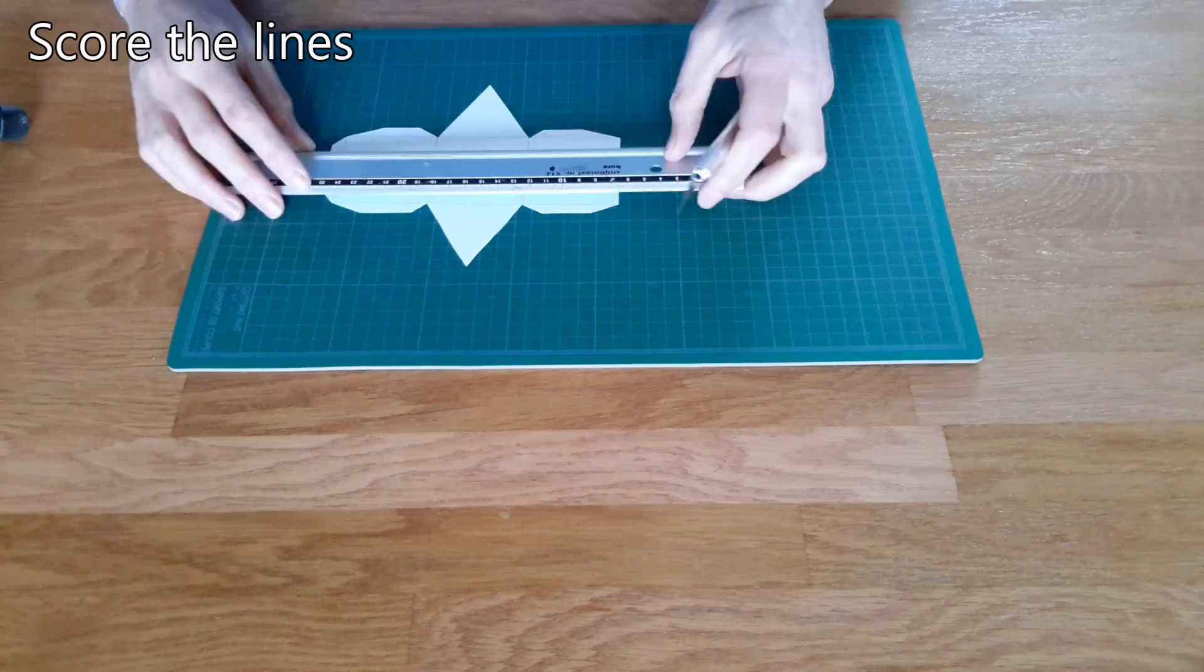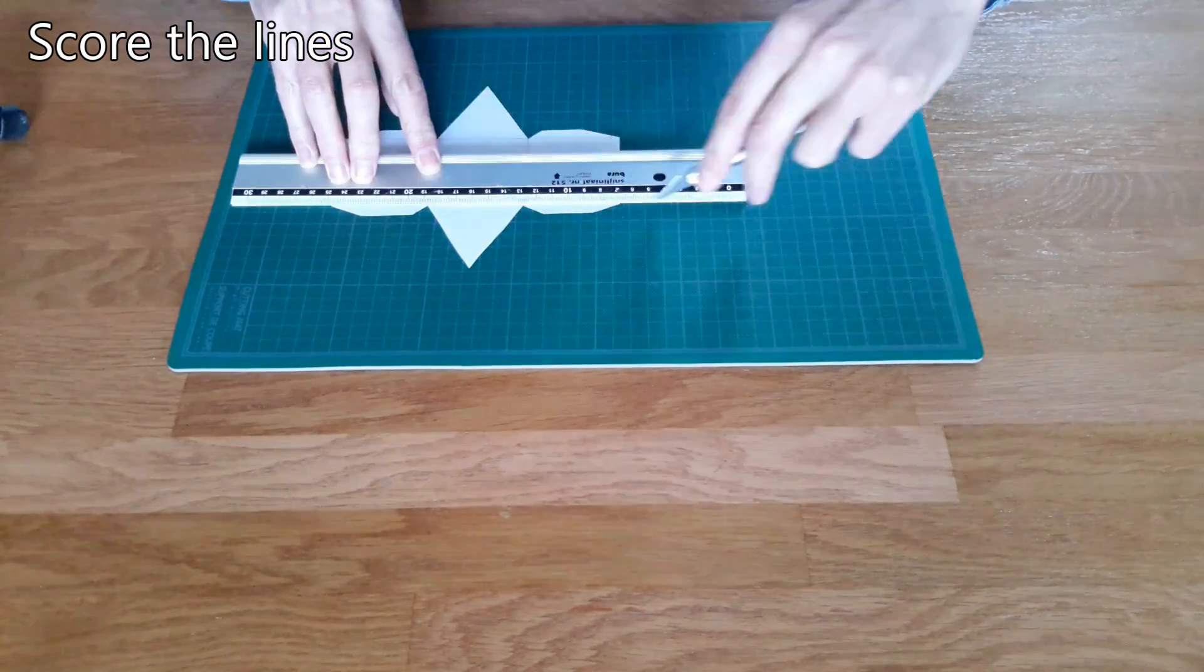Score the lines with the back of a knife. Scoring the paper makes folding easier.